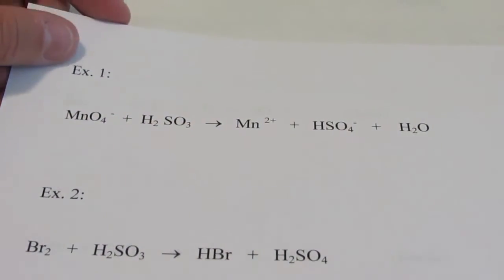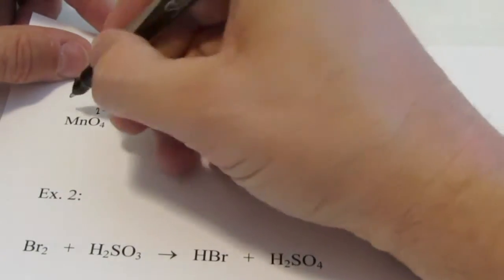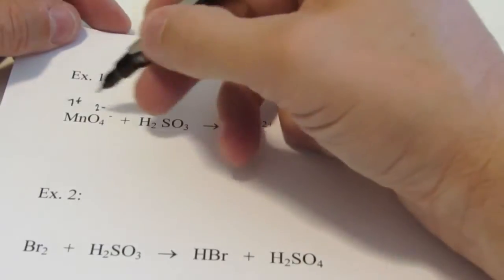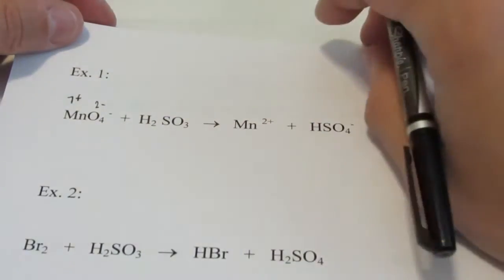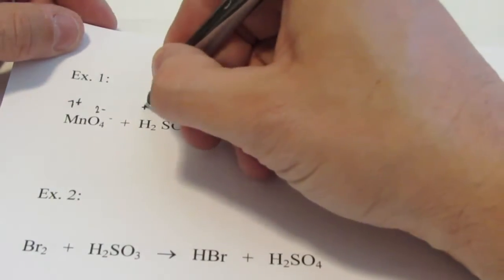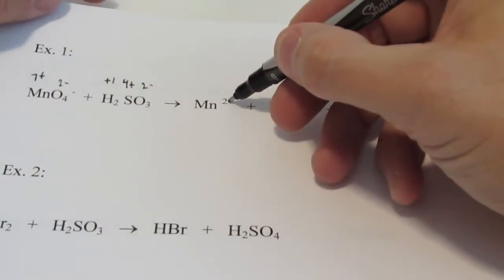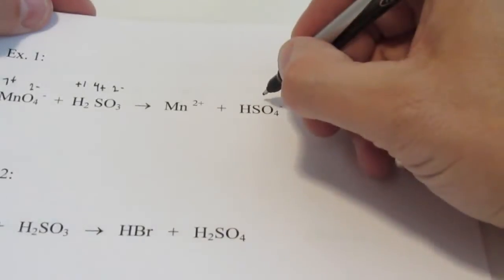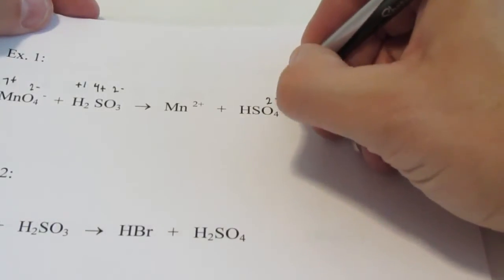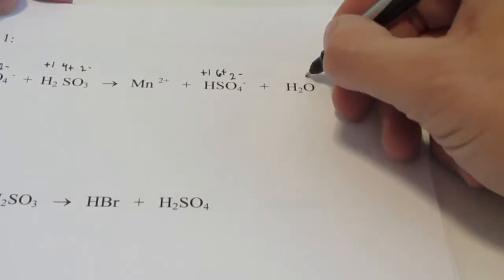Here is example number one. Let's assign oxidation numbers to each atom to begin. Oxygen is 2⁻, and the manganese in this case would be 7⁺. If you don't know how to assign oxidation numbers, check the previous two videos. Oxygen is 2⁻ here, hydrogen is +1 — that makes sulfur 4⁺. Manganese is 2⁺ on this side as stated. Here we have the hydrogen sulfate ion: oxygen 2⁻, hydrogen +1, so sulfur is 6⁺. Step one is finished.